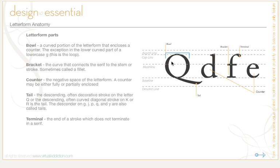The bowl is the curved portion of the letterform that encloses a counter. The exception is in the lower curved portion of a lowercase g, which is referred to as a loop, and we'll look at that momentarily. A bracket is the curve that connects the serif to the stem or the stroke, and it's sometimes called a filet. The counter — shown here in the lower portion of the E and inside of the D — is the negative space of the letterform. A counter may be either fully or partially enclosed.